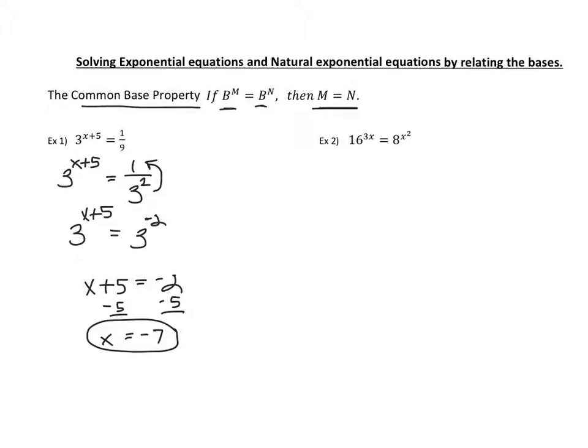Let's look at example 2. We have 16 as one of our bases and 8 as our other base, and we're trying to get the same bases. Well, 16 is not 8 squared, but we can write both 16 and 8 in terms of 2.